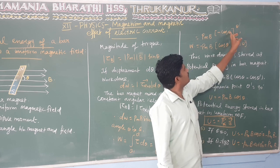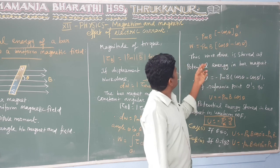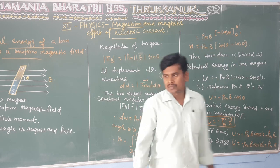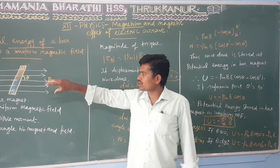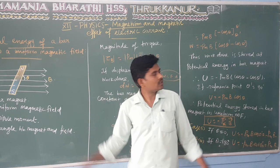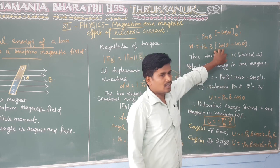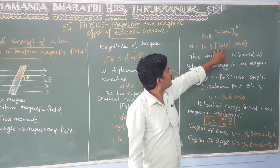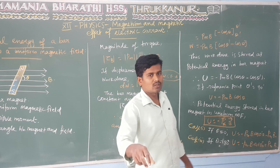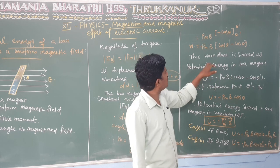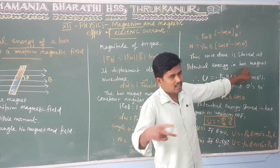We have theta as the upper limit. That is total work done in the magnetic field. The work is stored as potential energy in the magnetic field — the potential energy is stored in the magnetic field. This work is stored in the magnetic field.